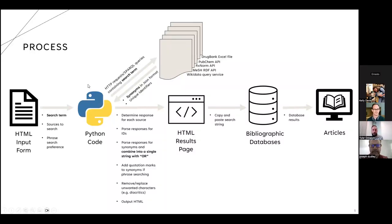One day I was compiling one of these lists and thought there must be a better way — that was my impetus for developing a linked data drug term tool. I developed the tool using Python, currently running in a virtual environment on my personal machine, but my hope is to eventually host it publicly. Briefly, the tool takes a search term from an HTML form, queries various linked data sources including Wikidata, retrieves synonyms and unique identifiers, and combines them into a search string output on an HTML results page.